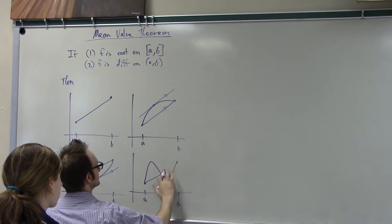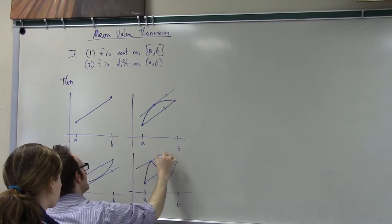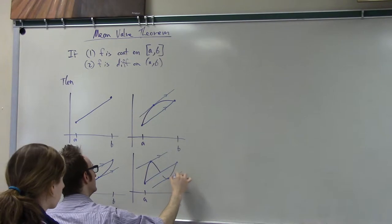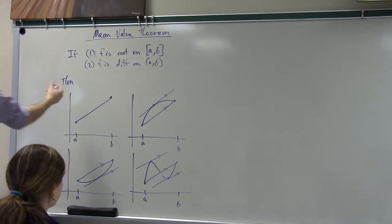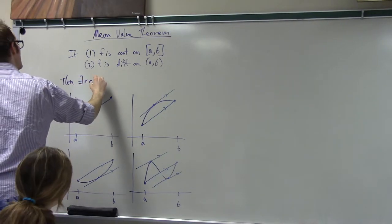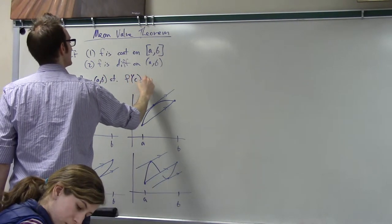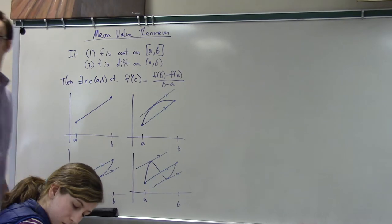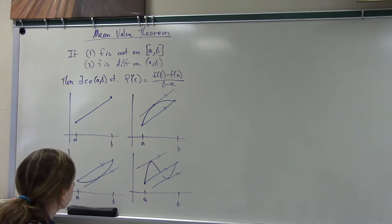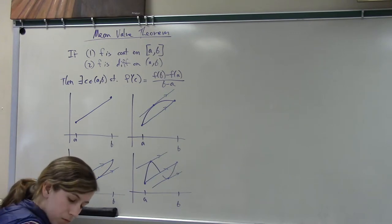And of course, we're learning so much math today, that whenever we say there exists one, we really mean at least one, so there might be more. All right, so the conclusion of this theorem is there exists a point C on the interval AB such that the derivative at C is equal to the slope of the line through A, F of A and B, F of B. How are we feeling about this? All right, and I have high expectations for deep understanding of this theorem.